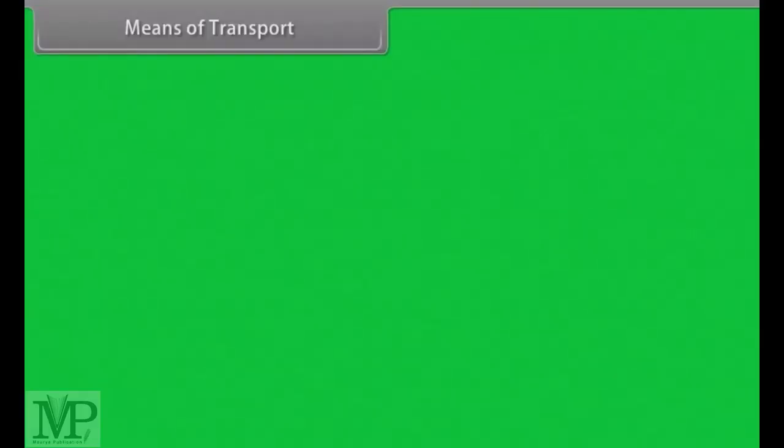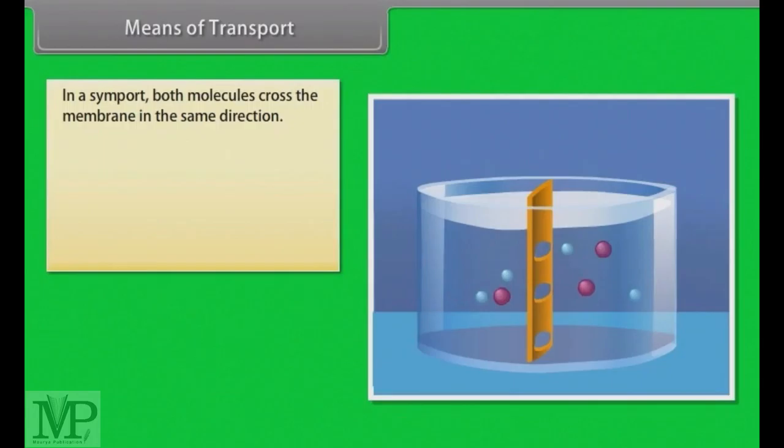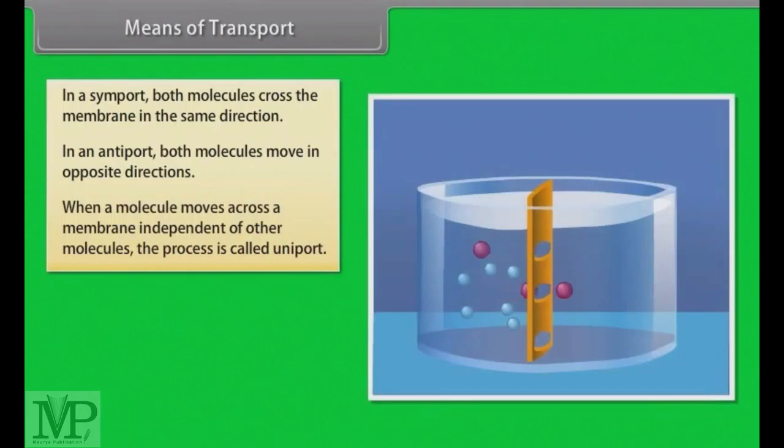Some carrier or transport proteins allow diffusion only if two types of molecules move together. In a symport, both molecules cross the membrane in the same direction. In an antiport, they move in opposite directions. When a molecule moves across a membrane independent of other molecules, the process is called uniport.